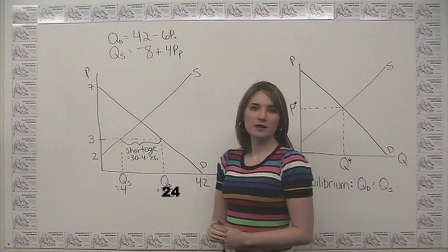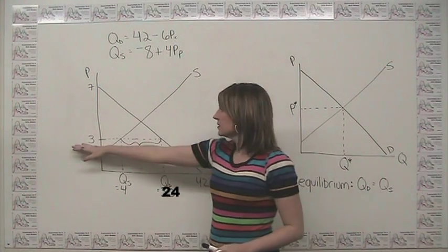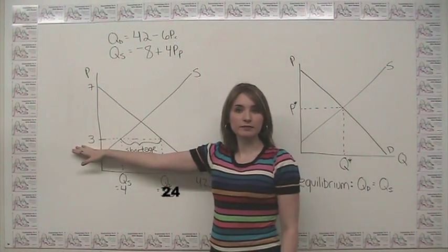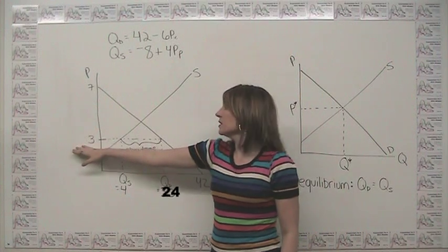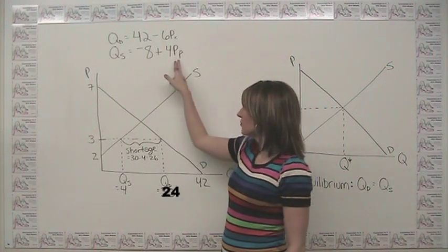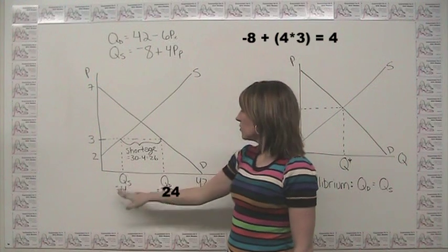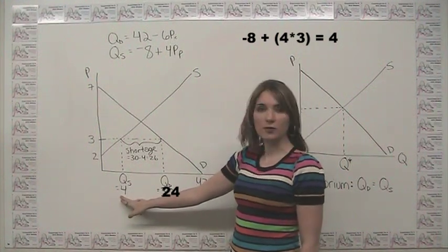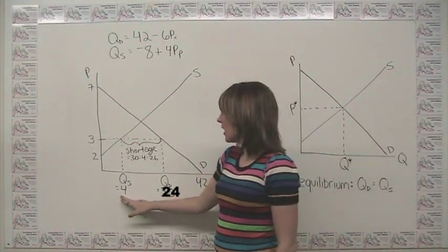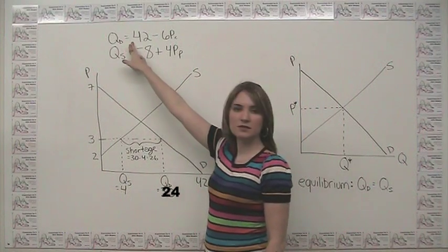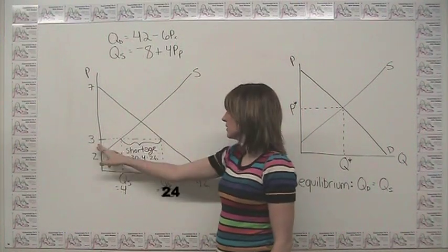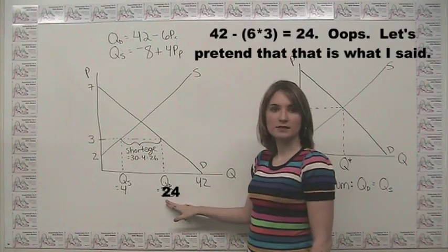We have a graph here. Now let's say that our price is at 3. At a price of 3, you can see by plugging that in for price in the supply equation, the quantity supplied at that price is 4. However, if you plug that into the demand equation, the demand for this item is 30.